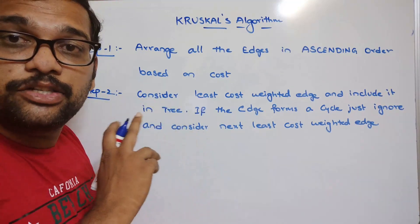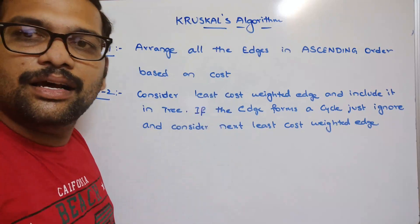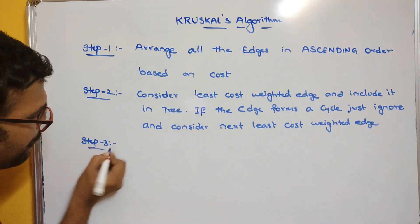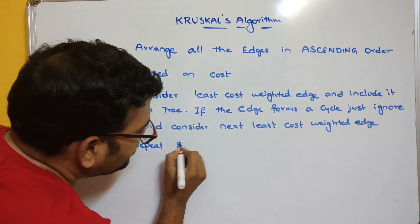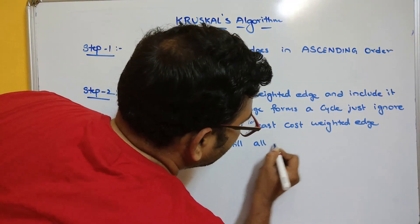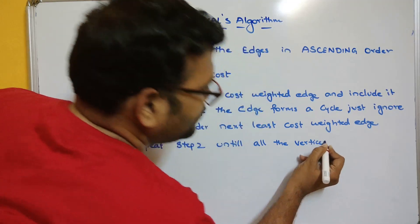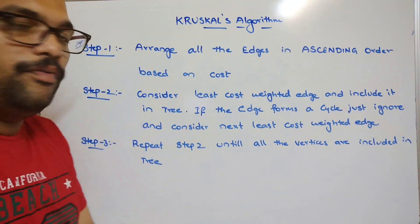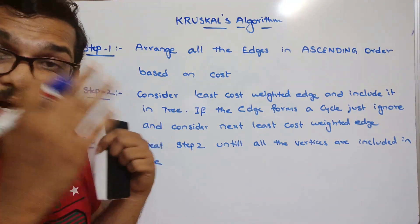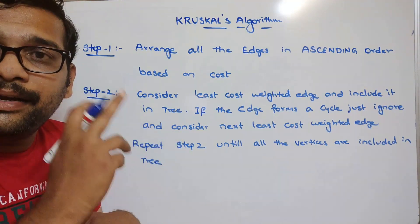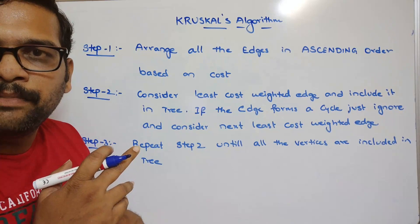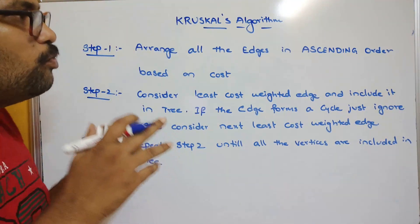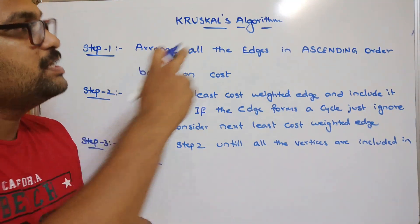We are using Kruskal's algorithm to find the minimum cost spanning tree. Step three: repeat step two until all the vertices are included in the tree. The spanning tree should have n vertices with n minus 1 edges, so we repeat until all vertices are covered.